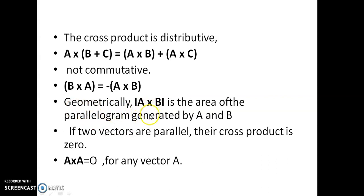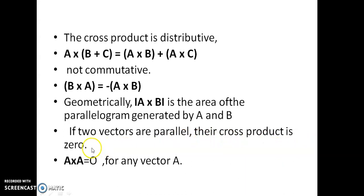Geometrically, |A cross B| is the area of the parallelogram generated by A and B. So the modulus of A cross B gives the area of the parallelogram, which is AB sin θ, where θ is the angle between the two vectors A and B. If the two vectors are parallel, then θ = 0, sin θ = 0, so AB sin θ = 0 and their cross product is zero. Therefore, for any vector, the cross product of that vector with itself is equal to zero: A cross A = 0, because the angle θ is 0.